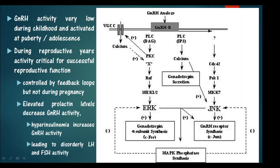JNK can also be called c-JNK, meaning c-Jun N-terminal kinases. Elevated levels of prolactin decrease GnRH activity. Hyperinsulinemia increases GnRH activity, and this leads to disorderly LH and FSH activity.